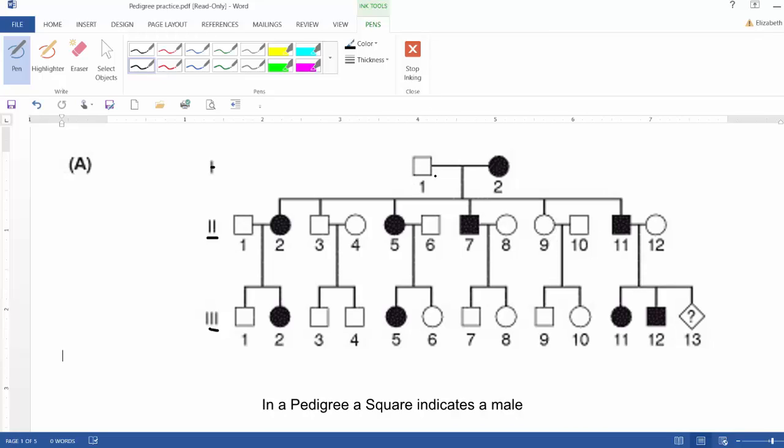And the convention in pedigrees is that a square indicates a man and a circle indicates a woman. If the square is empty, not filled in, then that person does not have or display the disorder. If the circle or square is filled in, it means that they do have or display the disorder.